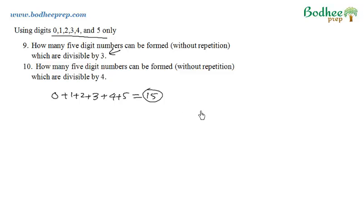Most students go wrong here because they feel that since the sum is 15, then all the numbers will be divisible by 5. So straight away they go by this way: 6, 5, 4, 3, and 2. Multiply it and they get the answer as 600.